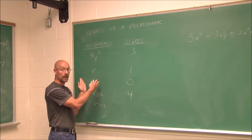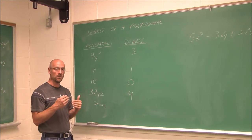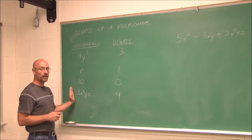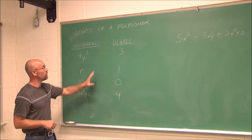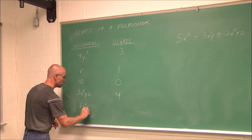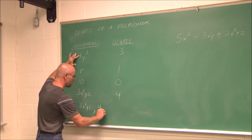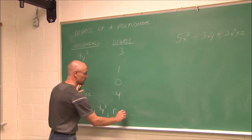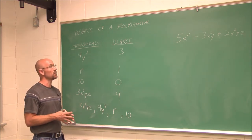When it comes to polynomials that are not just monomials, we'd like to write them in descending order — from highest power to lowest power. Looking at our examples, the monomial with degree 4 comes first, then degree 3 (4y cubed), then degree 1 (r), then the constant. That's how we arrange in descending order.